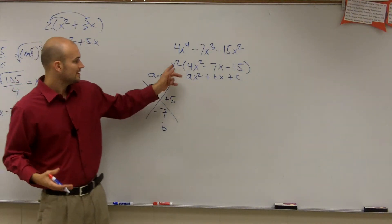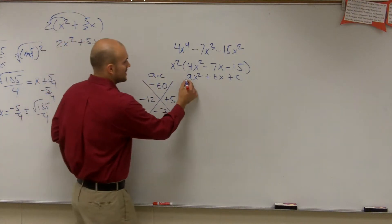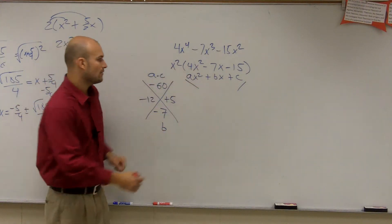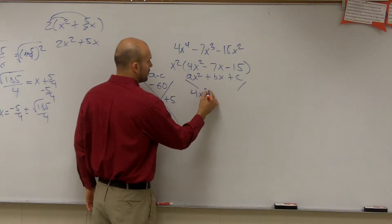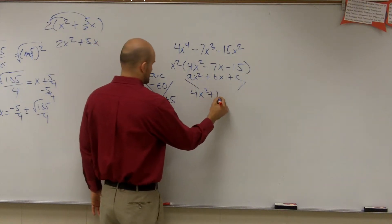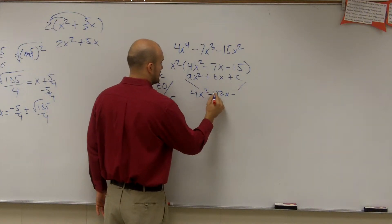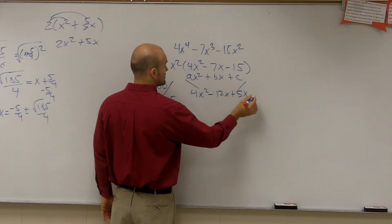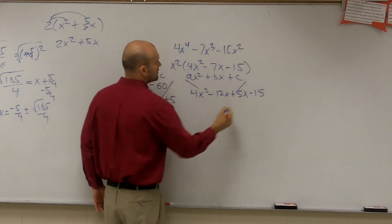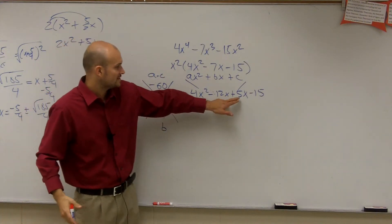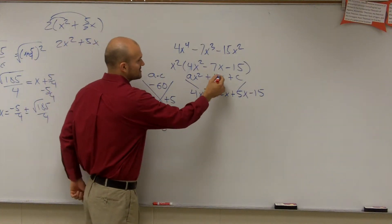Now, what we're going to do is we're going to leave, I'm just factoring this right now. So I'm going to kind of forget about the x squared for a second. So now what we can do is write it as 4x squared minus 12x plus 5x minus 15.